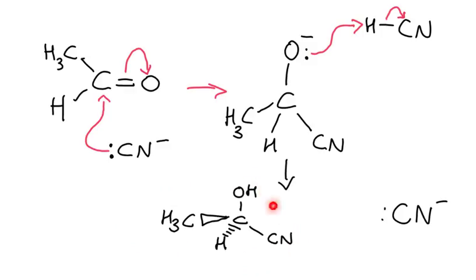This product is chiral because it's got an asymmetric carbon. There are 1, 2, 3, 4 different groups surrounding that carbon.